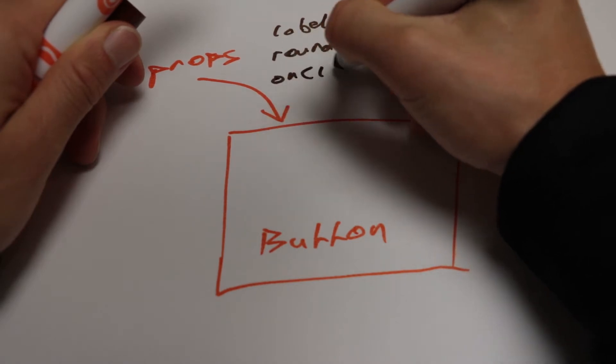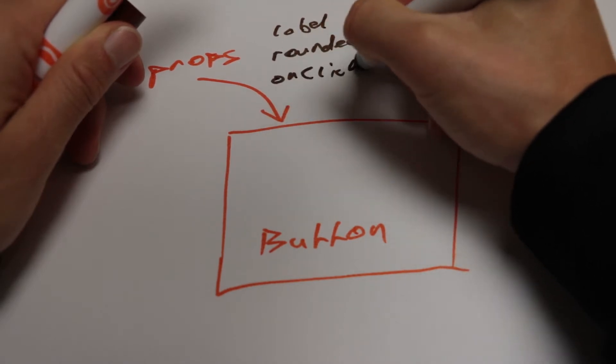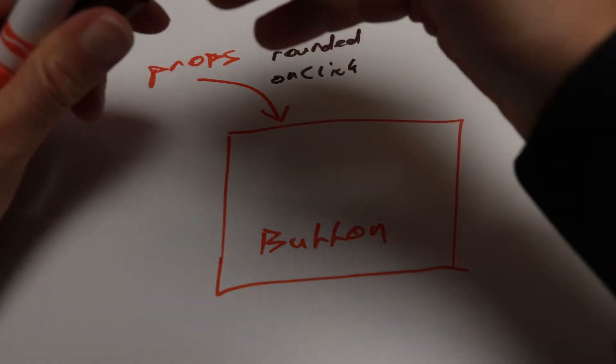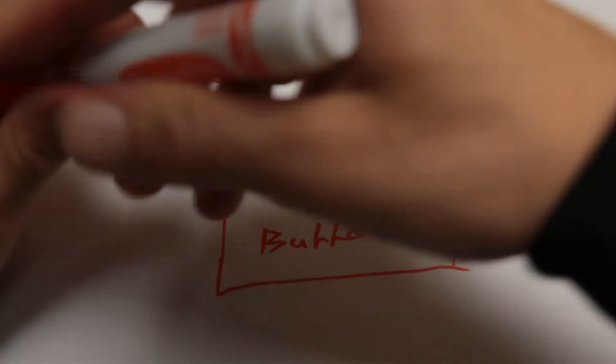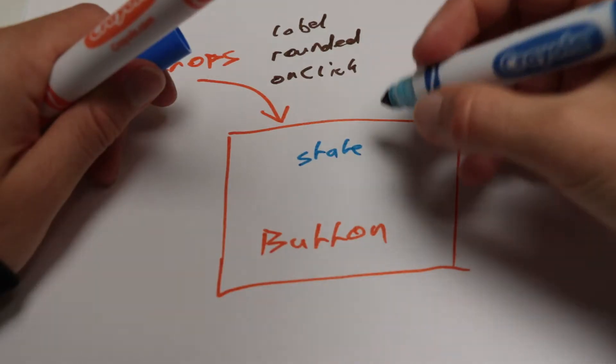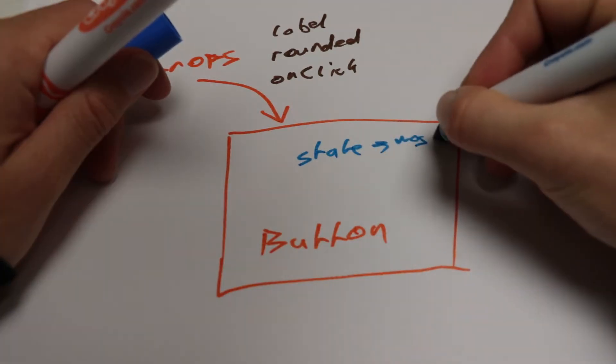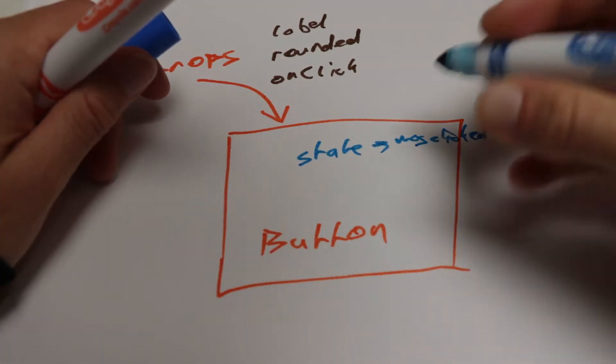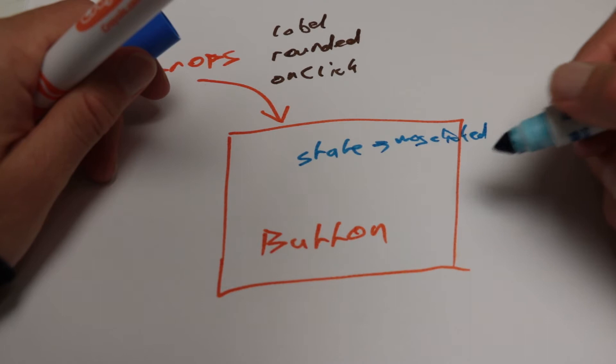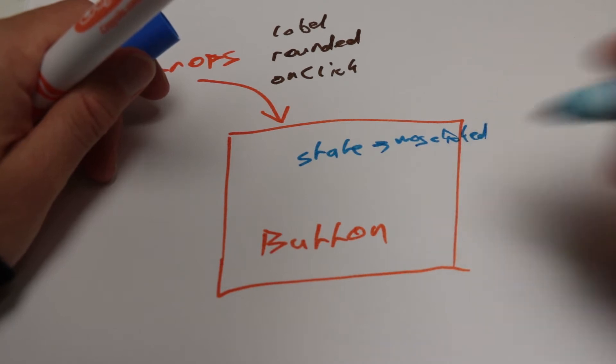We're going to talk about callbacks later. And internally it has state. This state is wasClicked, and depending on whether it was clicked, it does something.